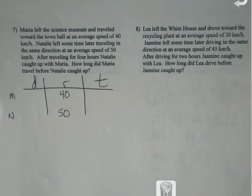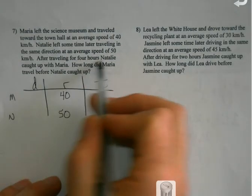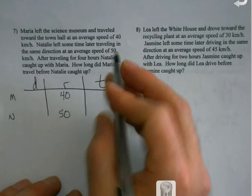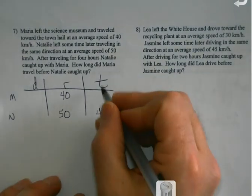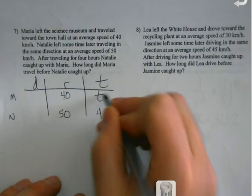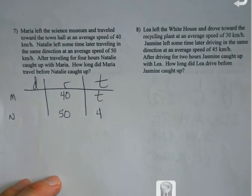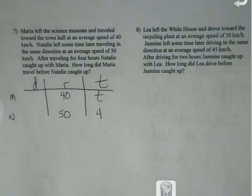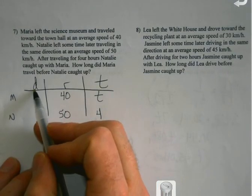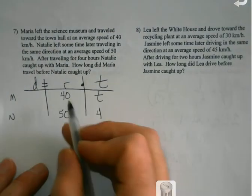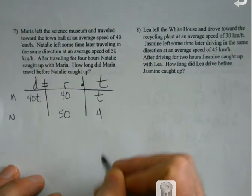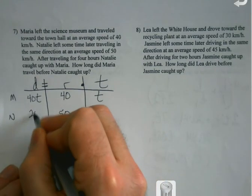Maria left the Science Museum and traveled toward the town hall at an average speed of 40 kilometers per hour. Okay. So Maria is going 40. Natalie left some time later traveling in the same direction at an average speed of 50 kilometers per hour. Okay. So we got our rates. After traveling for four hours, Natalie caught up with Maria. So Natalie traveled for four hours. Multiply them together. 40 T. Multiply them together. 200.